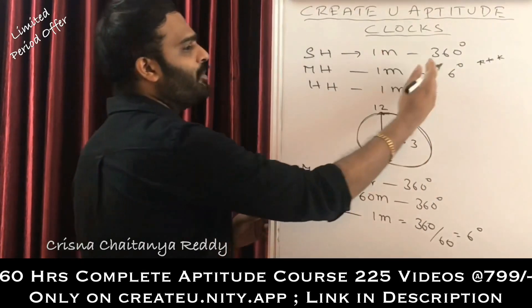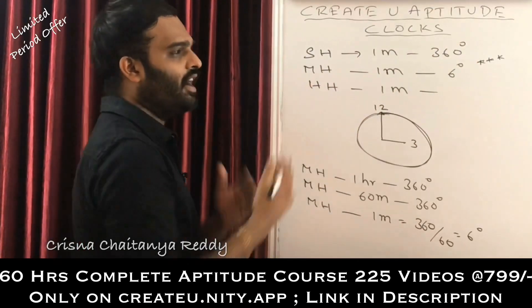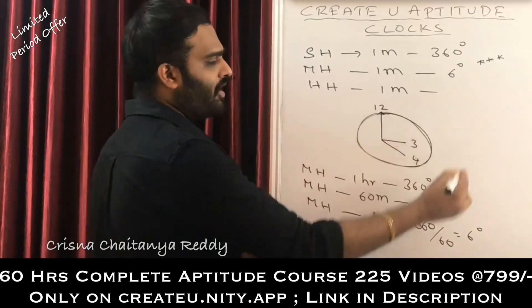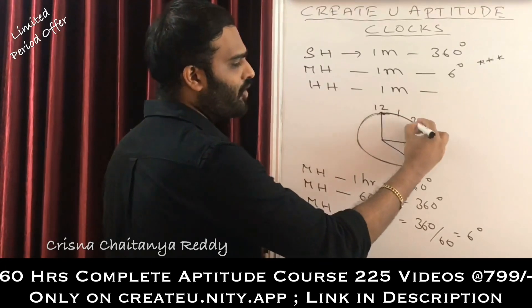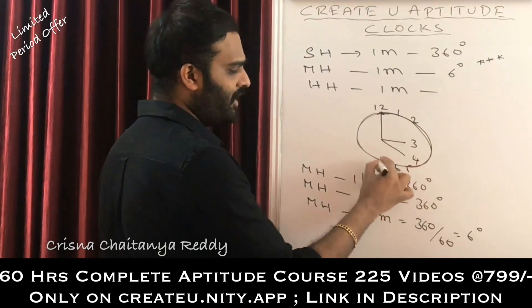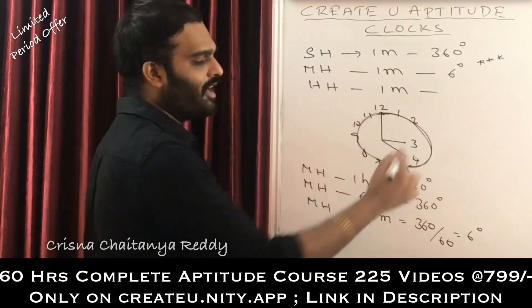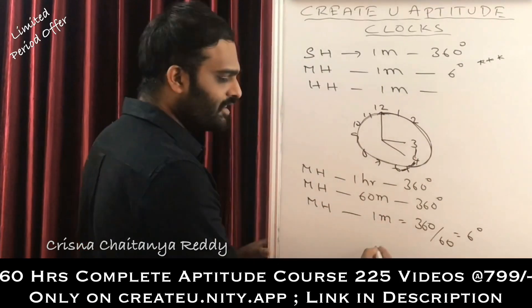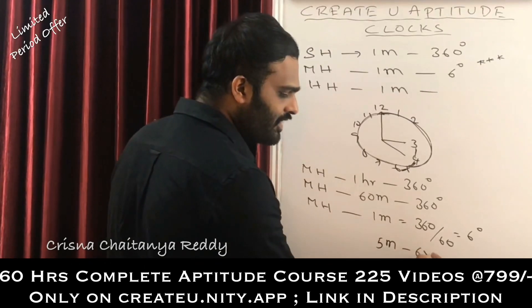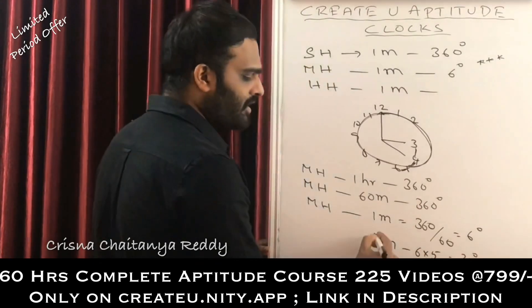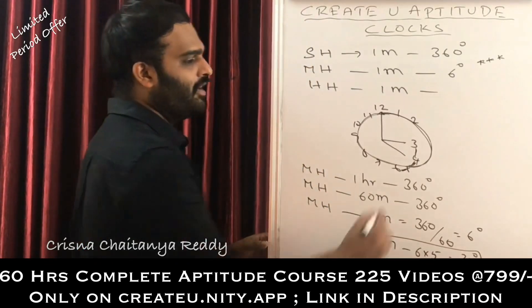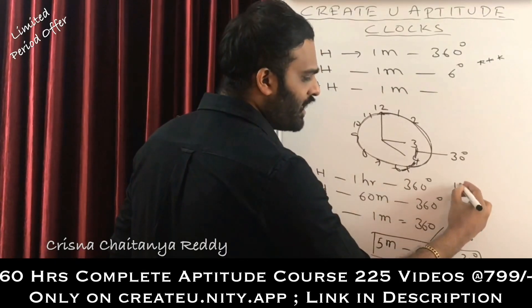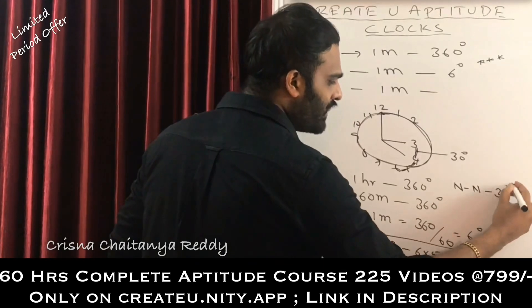Now let us look at the hour hand. But first, what is the gap between one number and the next number in a clock? A clock has 12 numbers total. The gap between any number and the next is 5 minutes. Since 1 minute equals 6 degrees, 5 minutes equals 6 × 5 = 30 degrees. So the gap between any two adjacent numbers on a clock is always 30 degrees — this will help us a lot in solving questions.